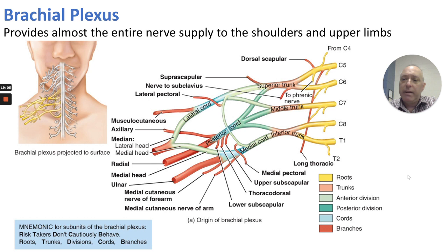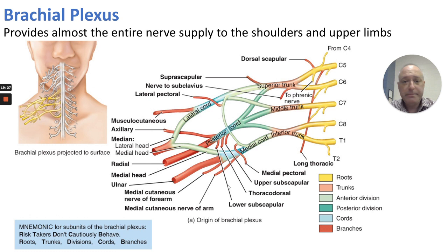The brachial plexus is probably the most complex plexus, providing almost the entire nerve supply to the shoulders and upper limbs. It is split into roots, trunks, divisions (anterior and posterior), cords, and branches — remembered by the mnemonic 'roots, trunks, divisions, cords, branches.' From C4 through C8 and T1 we get superior, middle, and inferior trunks; lateral, posterior, and medial cords; leading to major nerves including the radial, median, and ulnar nerves.